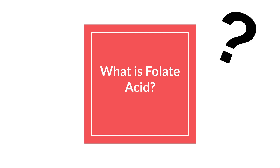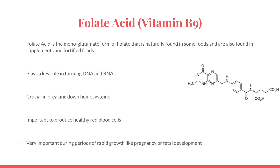What is folic acid? Folic acid, also known as vitamin B9, is the monoglutamate form of folate that is naturally found in some foods and is also found in supplements and fortified foods. It plays a key role in forming DNA and RNA. It is crucial for breaking down homocysteine. It is important to produce healthy red blood cells, and very important during periods of rapid growth like pregnancy or fetal development. Remember this last point because it will be important later on in the video.